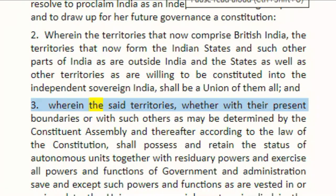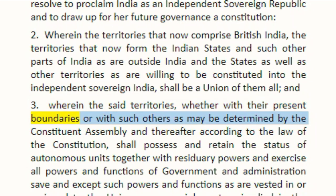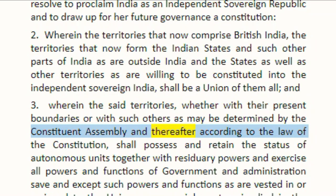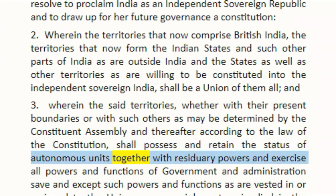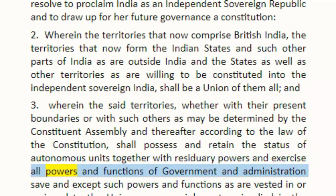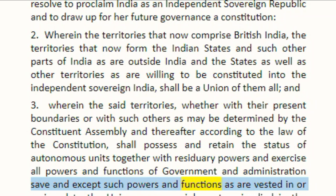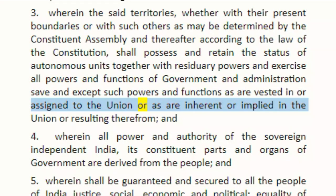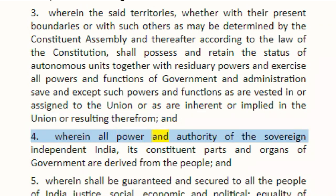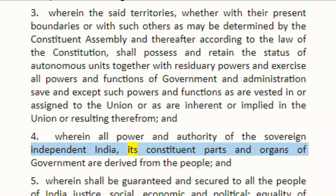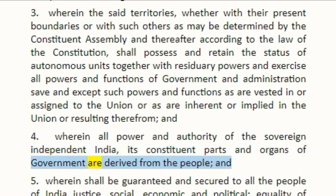3. Wherein the territories, whether with their present boundaries or with such others as may be determined by the constituent assembly, and thereafter according to the law of the constitution, shall possess and retain the status of autonomous units together with residuary powers, and exercise all powers and functions of government and administration, save and except such powers and functions as are vested in or assigned to the union, or as are inherent or implied in the union. 4. Wherein all power and authority of the sovereign independent India, its constituent parts and organs of government, are derived from the people.